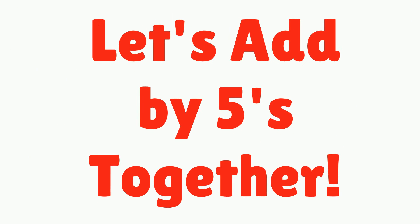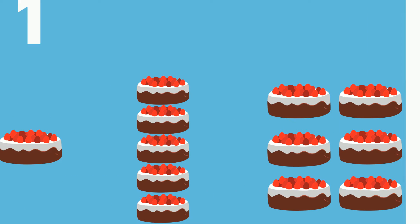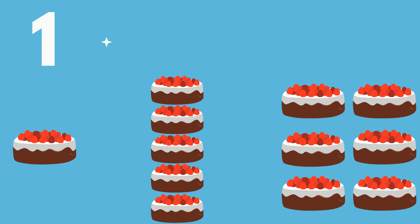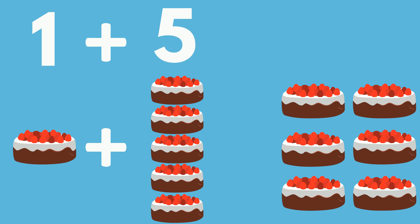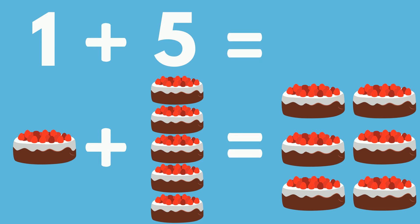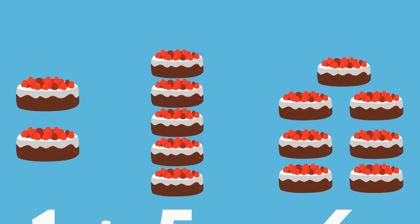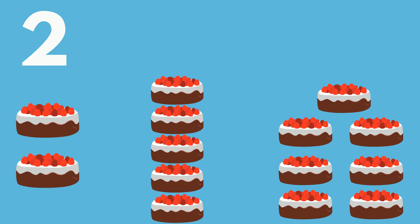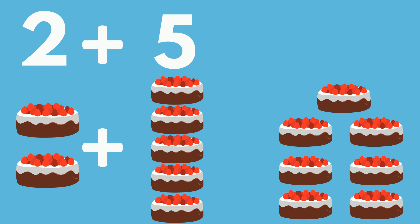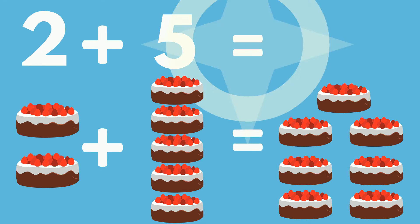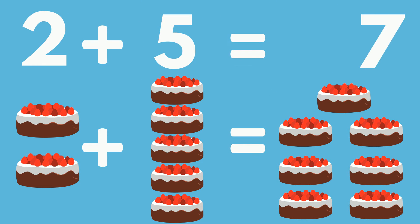Let's add by fives together. 1 cake plus 5 cakes equals 6 cakes. 2 cakes plus 5 cakes equals 7 cakes.